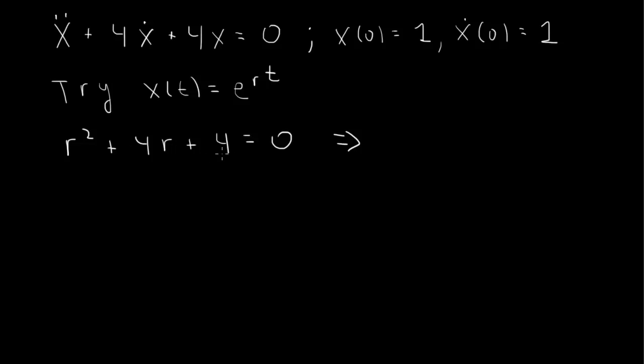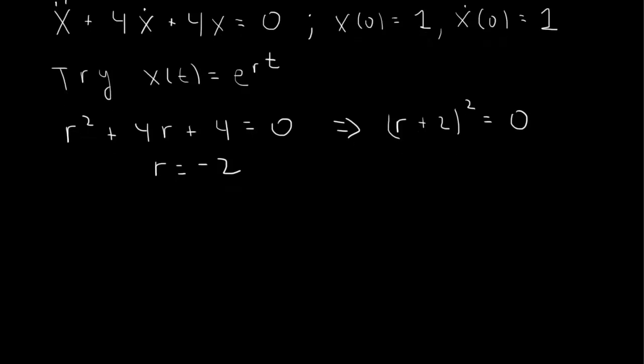This one will factor. So 2 times 2 is 4, 2 plus 2 is 4. So this is r plus 2 squared equals 0. So we have one root of r equals minus 2. So this is the case of repeated roots of the characteristic equation.